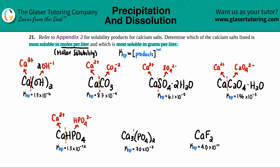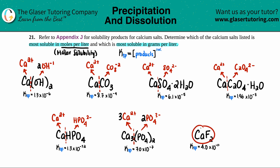For calcium phosphate, the break is between calcium and PO₄. Phosphate is always 3−, giving Ca²⁺ and PO₄³⁻. Balancing gives three calciums and two phosphates. Last one: calcium fluoride breaks into Ca²⁺ and F⁻. There are two fluorines so we put a 2 in front of F⁻, and one calcium. That's the first step done.